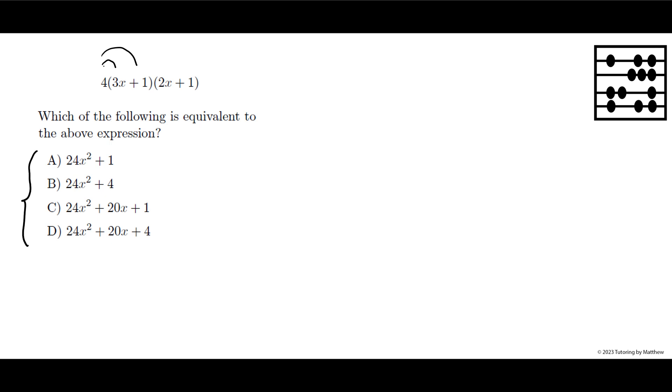Notice that 4 times 1 times 1 is 4. That eliminates a couple of answer choices. That means that A is out and C is out. We're down to B and D.